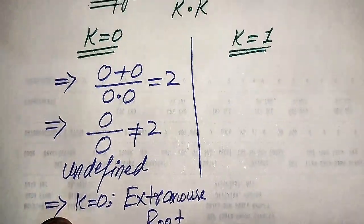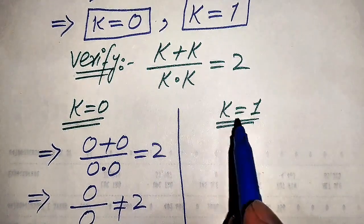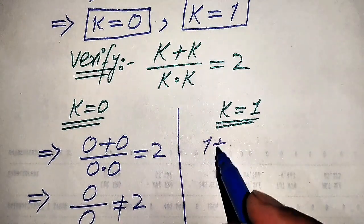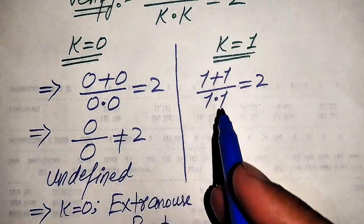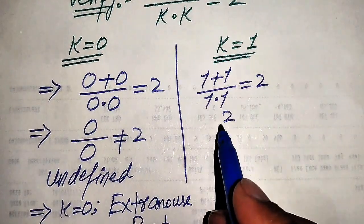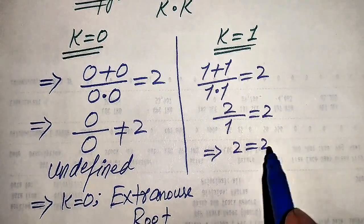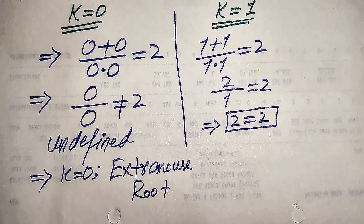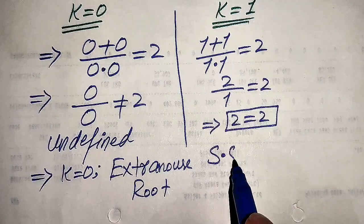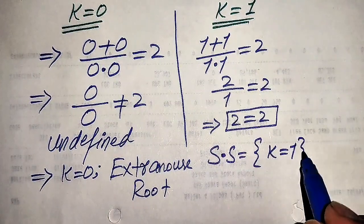Now we check the second root, k equals 1. Substituting gives 1 plus 1 divided by 1 times 1 equals 2, which simplifies to 2 divided by 1 equals 2, giving us 2 equals 2. Both sides are equal, so k equals 1 satisfies the given equation.